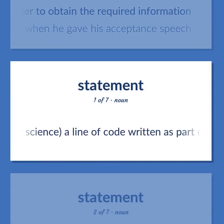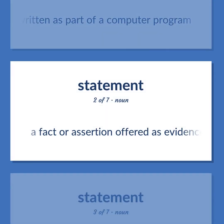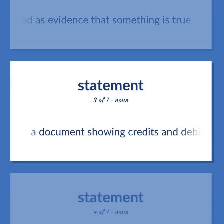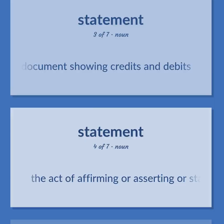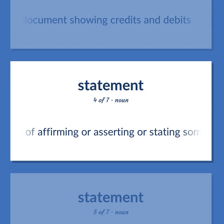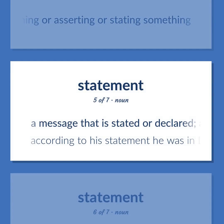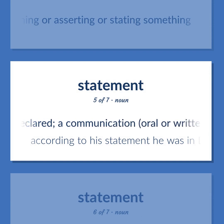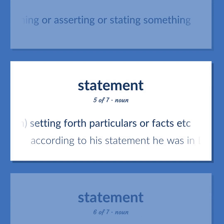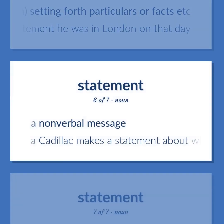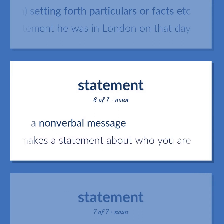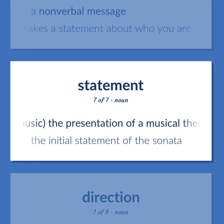Statement: computer science — a line of code written as part of a computer program. A fact or assertion offered as evidence that something is true. A document showing credits and debits. The act of affirming or asserting or stating something. A message that is stated or declared; a communication, oral or written, setting forth particulars or facts — according to his statement he was in London on that day. A non-verbal message — a Cadillac makes a statement about who you are. Music: the presentation of a musical theme — the initial statement of the sonata.